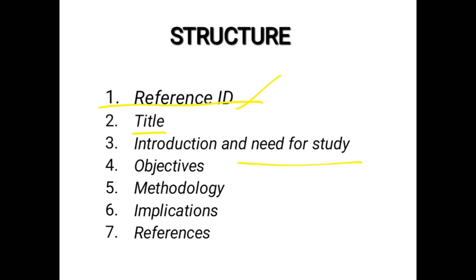Next is the objective — exactly what you are going to prove and what result you expect. Fifth is methodology, which is very important. In it you will include: study type, study design, study population, inclusion and exclusion criteria, how you are going to collect and analyze the data, and how you are going to find the results.